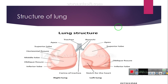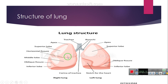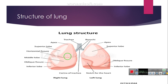This is the lung structure. You can see here the trachea, which branches into the bronchi, and the bronchi are further divided into bronchioles. This is the right lung and this is the left lung, with the superior lobe, the middle lobe, and the inferior lobe. The lungs are roughly cone-shaped structures with an apex, a base, three surfaces, and three borders.